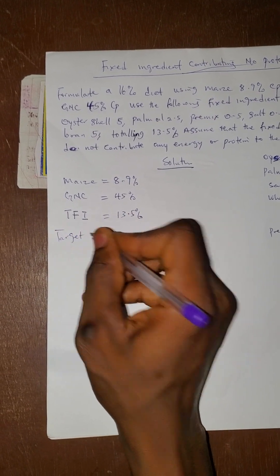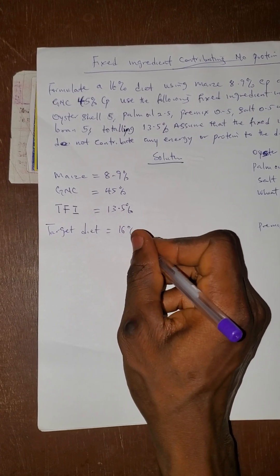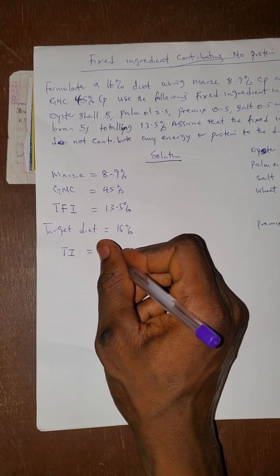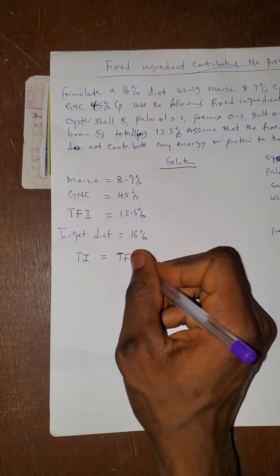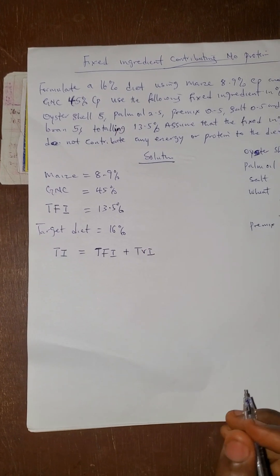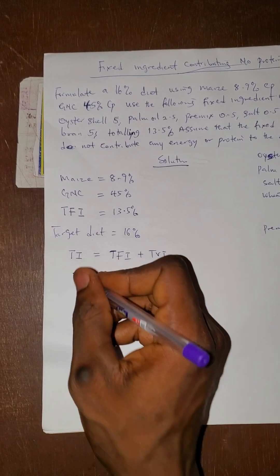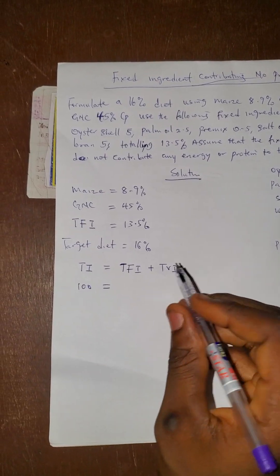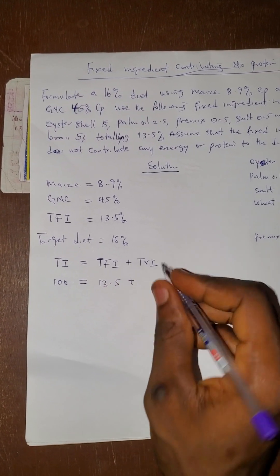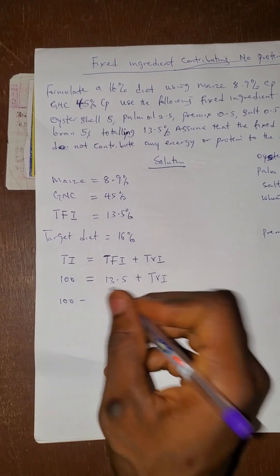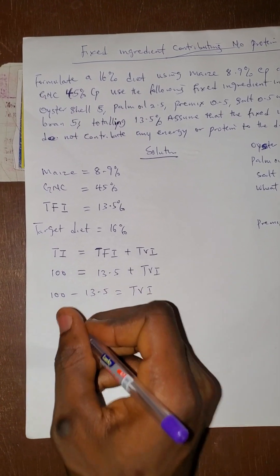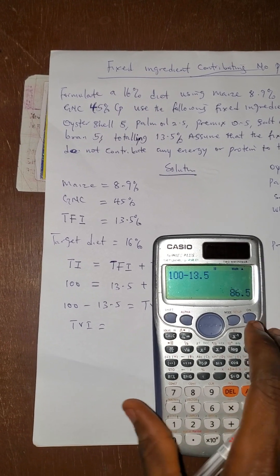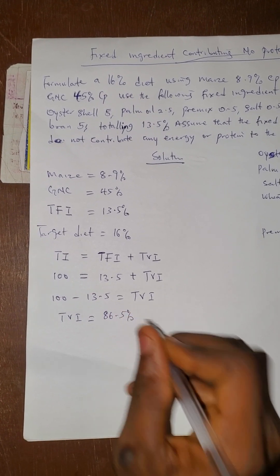Now what is our target? We are asked to formulate the feed at 16%. The total ingredients that must be inside a feed: total ingredients equals total fixed ingredients plus total variable ingredients. Total ingredients is always 100, because we are talking about percentage. So 100 equals 30.5 plus total variable ingredients. Therefore, total variable ingredients equals 100 minus 30.5, which is 86.5%.